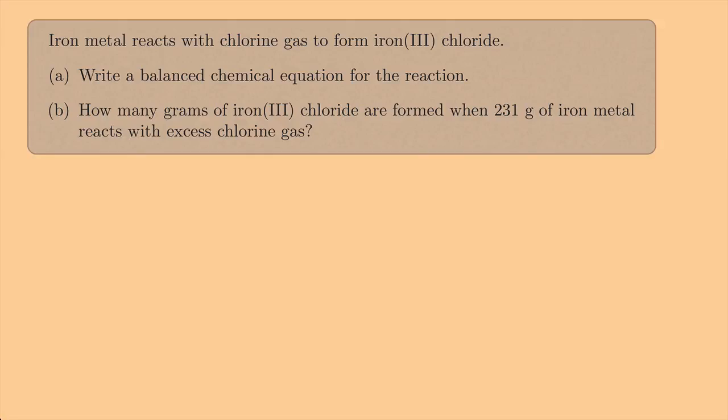Iron metal reacts with chlorine gas to form iron(III) chloride. Part A, write a balanced chemical equation for the reaction. Part B, how many grams of iron(III) chloride are formed when 231 grams of iron metal reacts with excess chlorine gas.